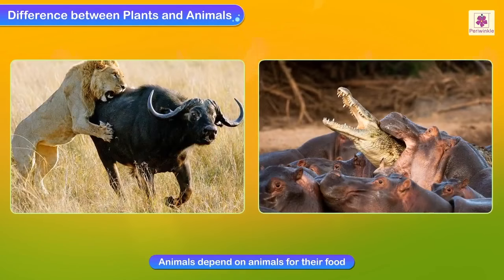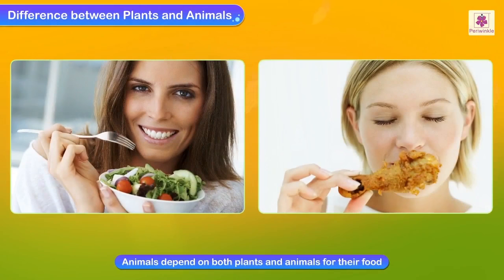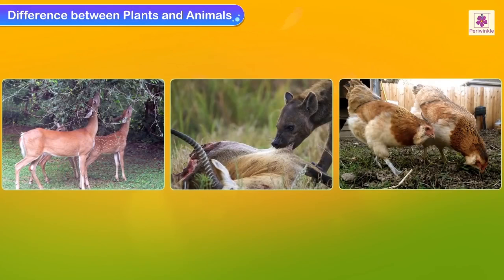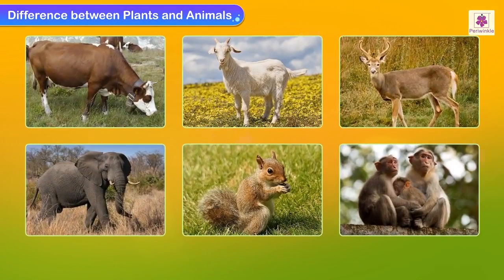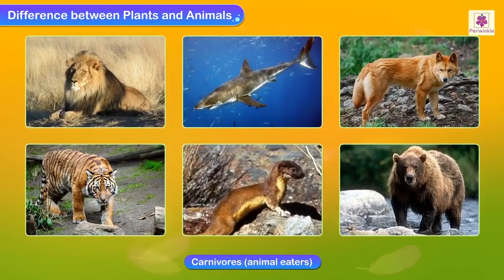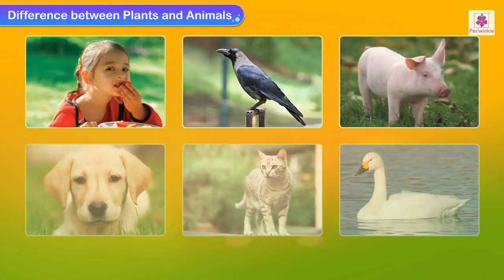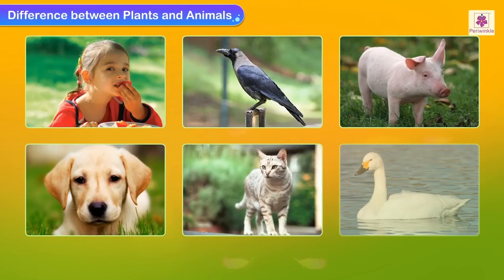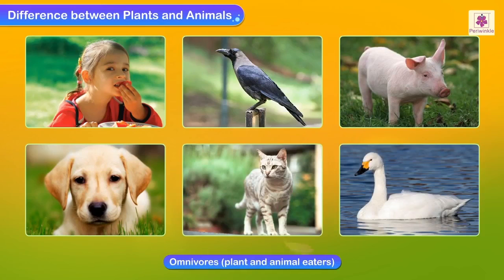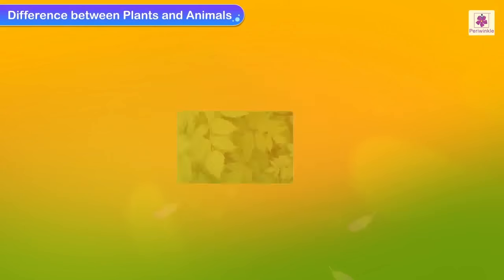Animals do not make their own food but depend on plants, other animals, or both for their food. In general, they are termed as consumers. Animals are either herbivores — that is, plant eaters — or carnivores — that is, animal eaters. Living beings such as man, crow, and some other animals feed on both plants and animals.